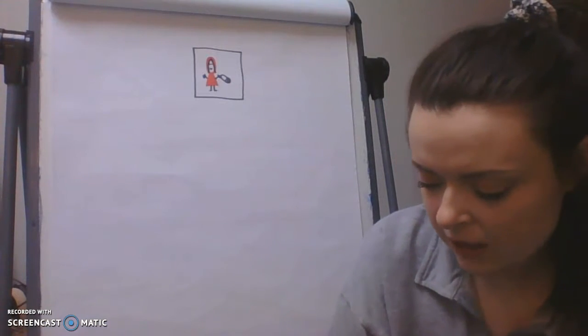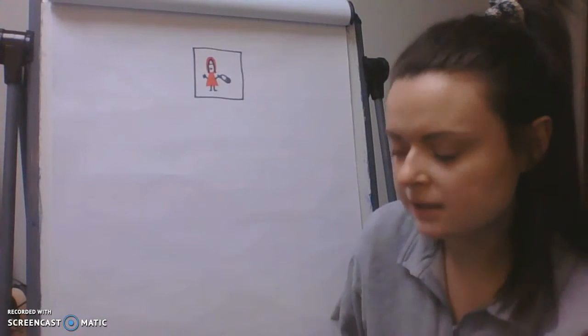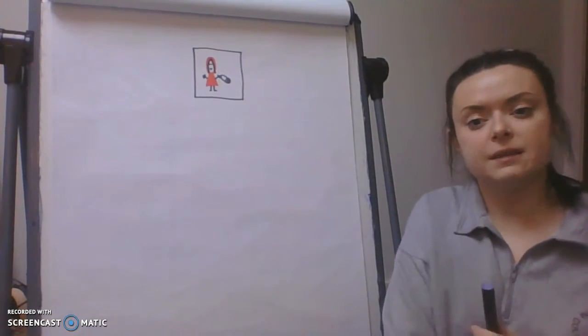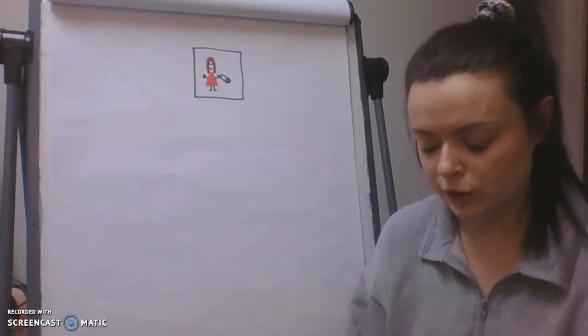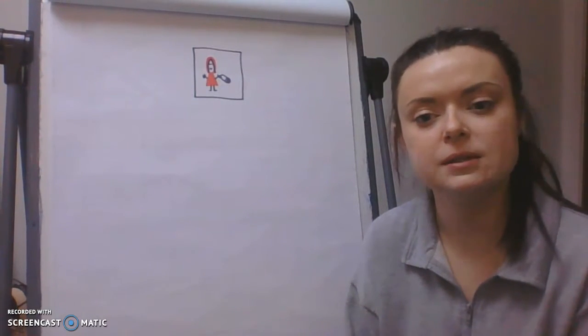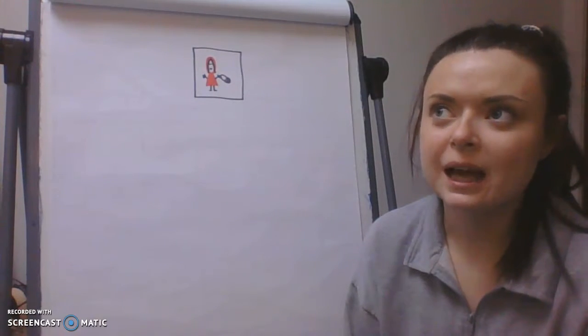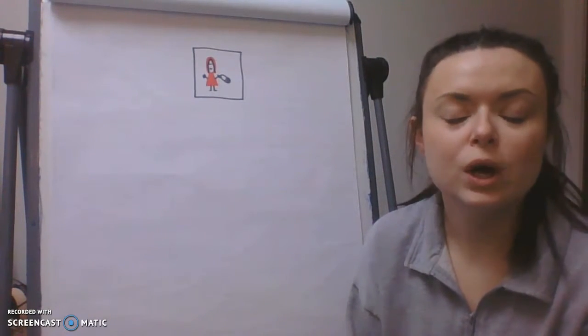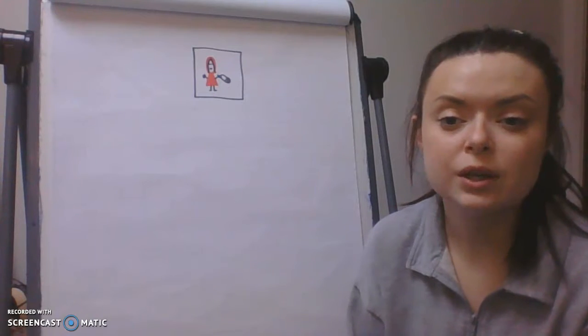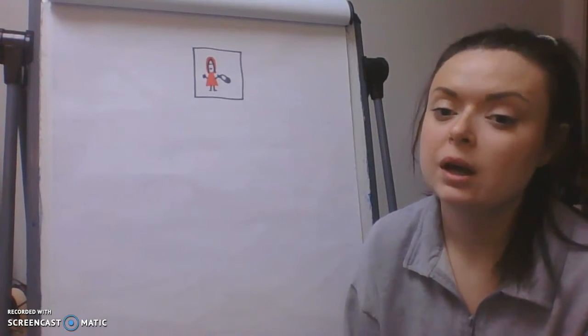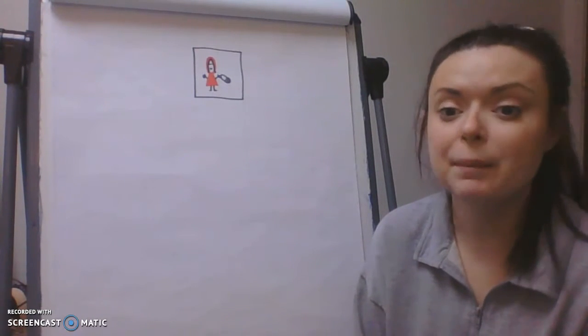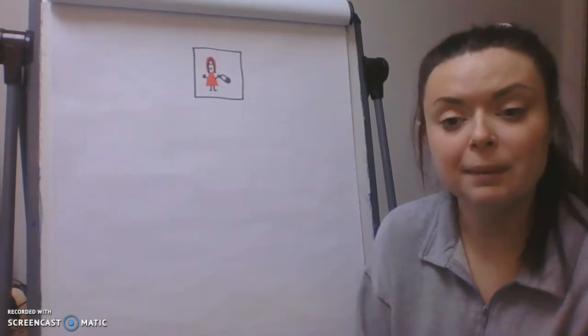Before I start writing my sentences I need to think of some adjectives to describe Little Red Riding Hood. Can you remember what an adjective is? Well done. It is a word that describes an object, an animal, a person, a place.